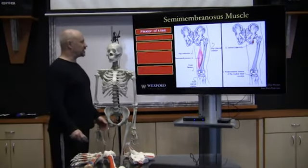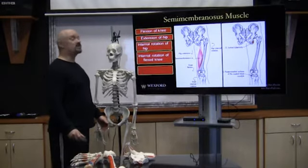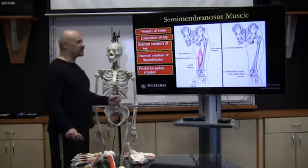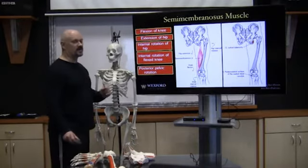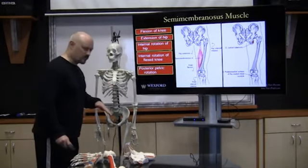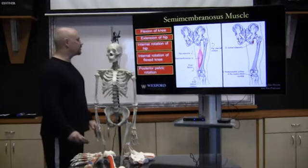The semimembranosus does flexion of the knee, extension of the hip, internal rotation of the hip, internal rotation of a flexed knee, and posterior pelvic rotation. It's another part of the hamstrings, and when the feet are fixed, it causes extension of the trunk.